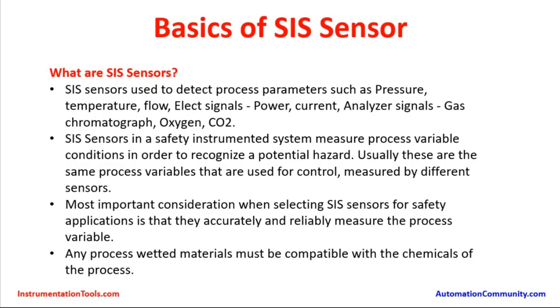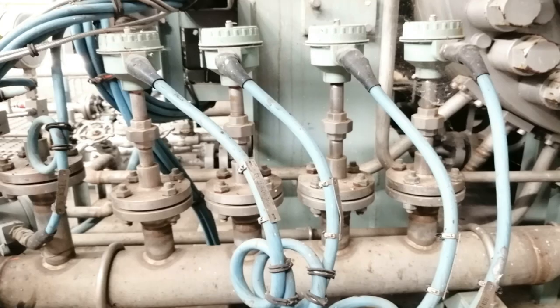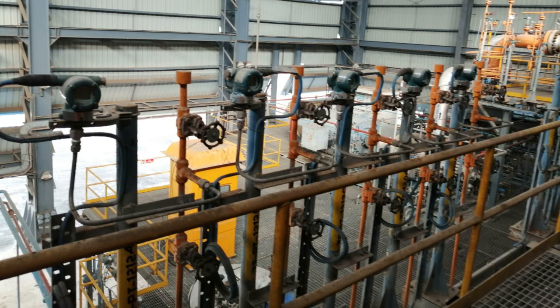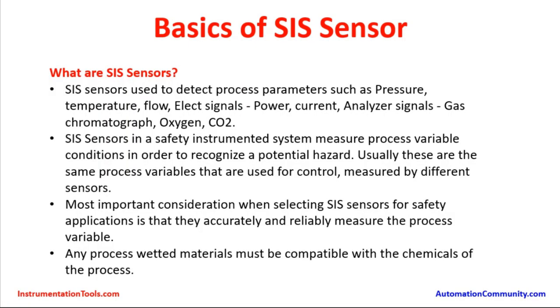The most important consideration when selecting SIS sensors for safety applications is that they accurately and reliably measure the process variable. Whenever SIS sensors are used in the process, selection should ensure they measure the process parameter very accurately and reliably. Repeatability of measurement is another criteria, and sensors need to be quite rugged with a long life for accurate process measurement.